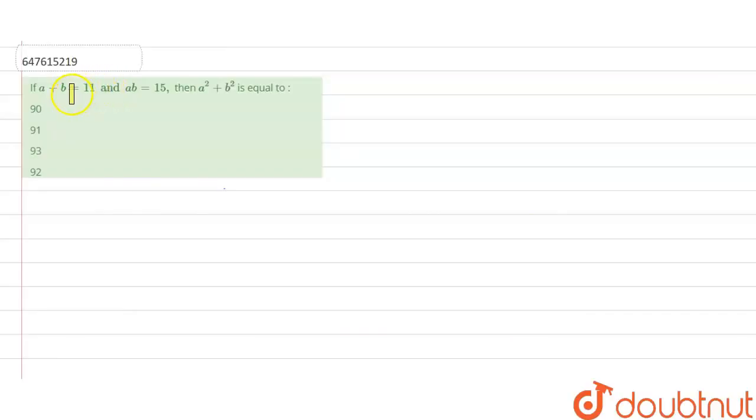Hello everyone. The question is: if A plus B is equal to 11 and AB is equal to 15, then what is A square plus B square? So, A plus B equals 11 is given, AB equals 15, and we need to find the value of A square plus B square.